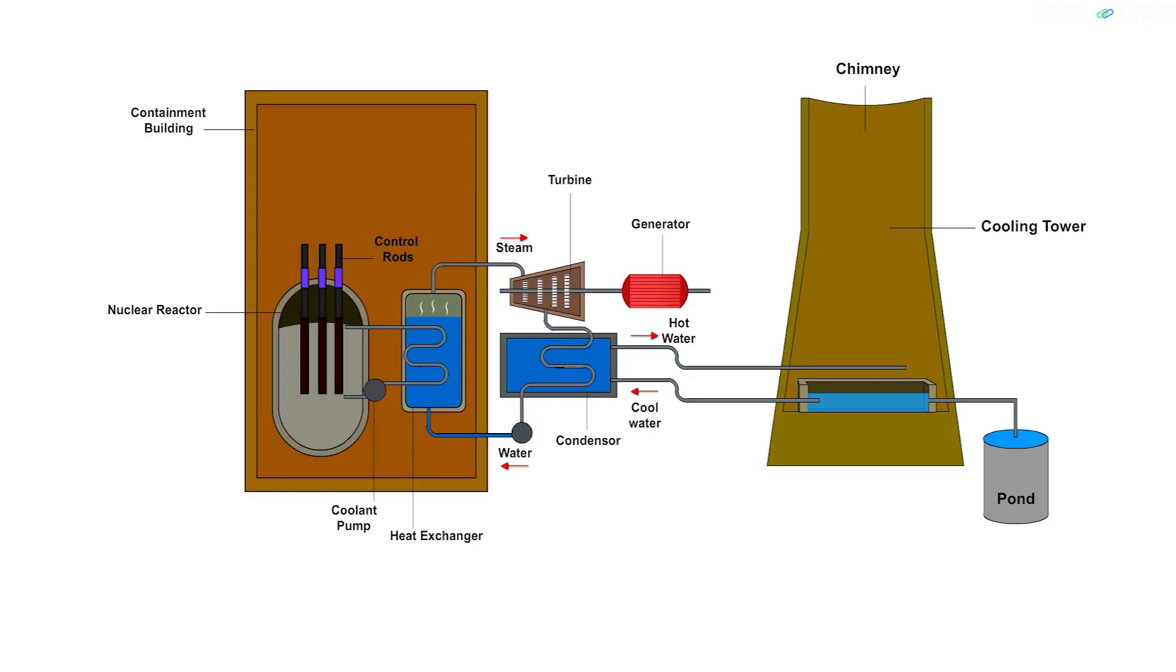The steam coming out of the turbine is converted back into water by means of a condenser. The condenser has a supply of water from a nearby water source. When the steam comes in contact with the water, it cools down and gets converted into water. This water is recirculated again for extracting heat from the reactor.